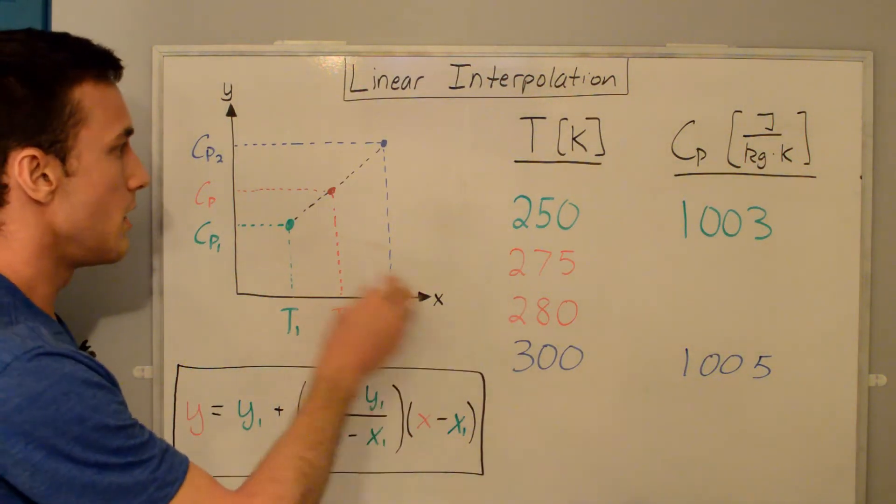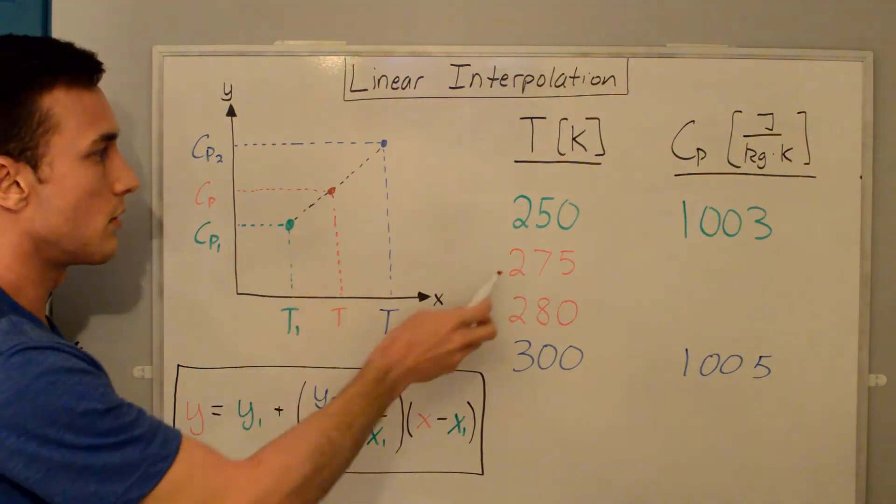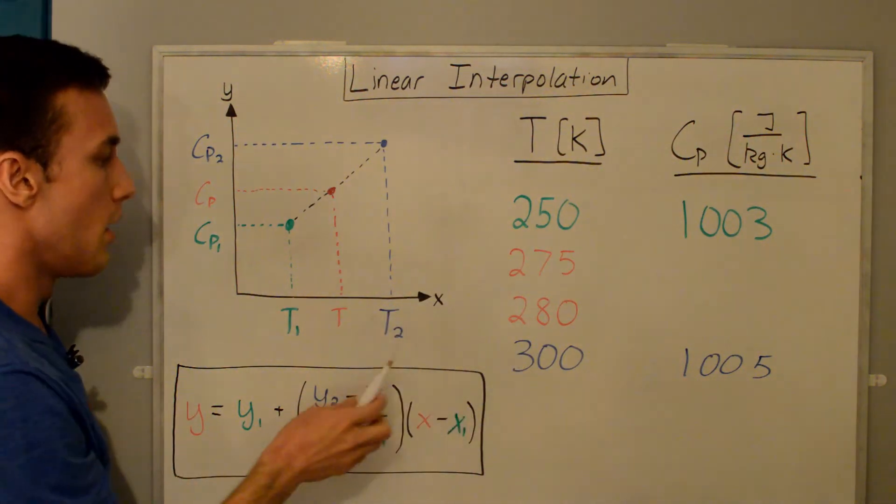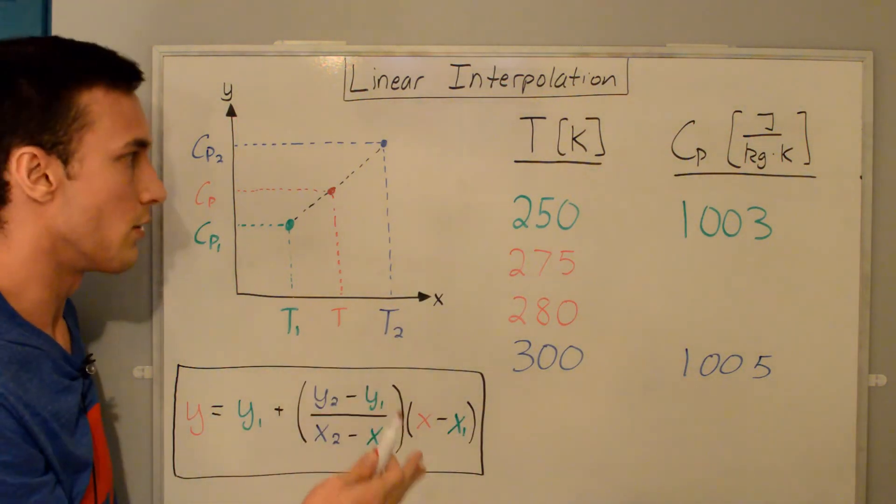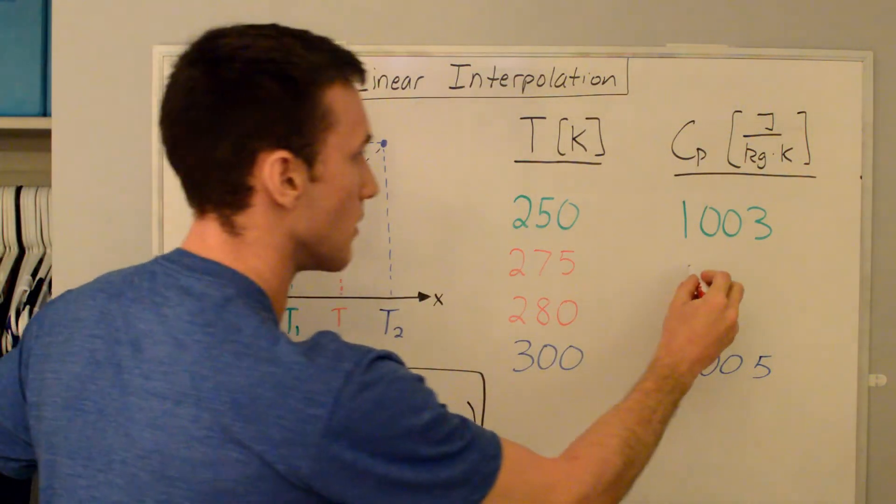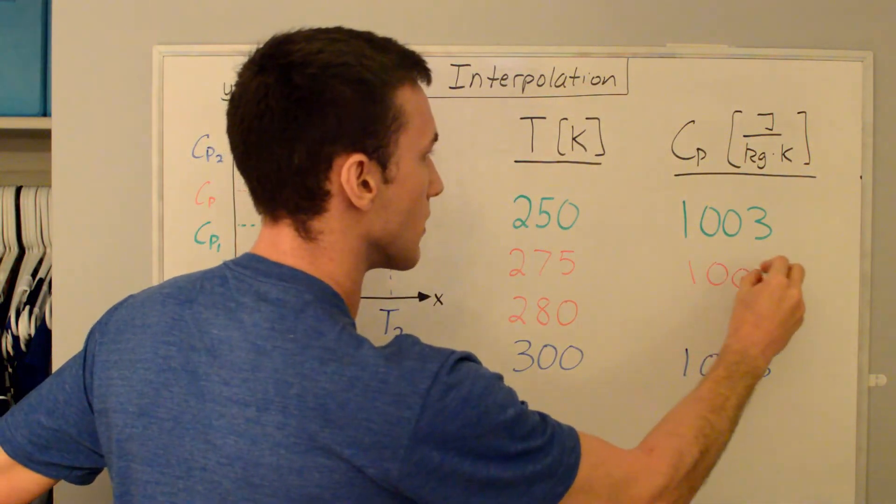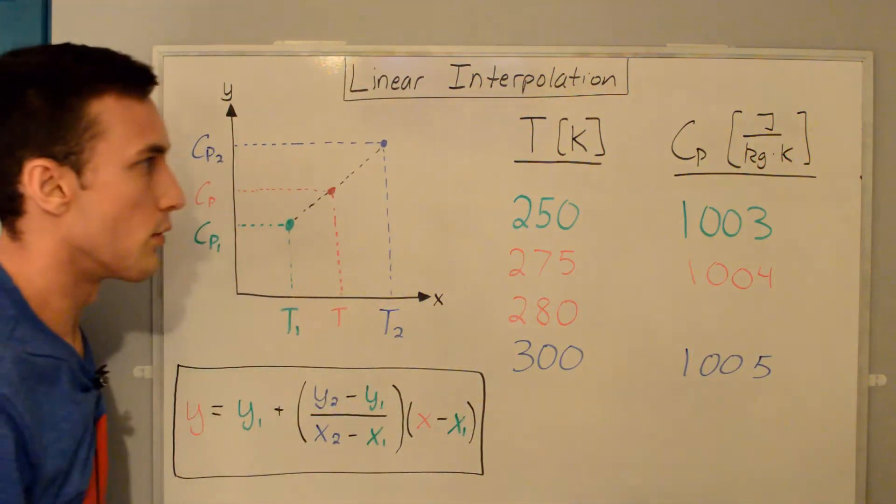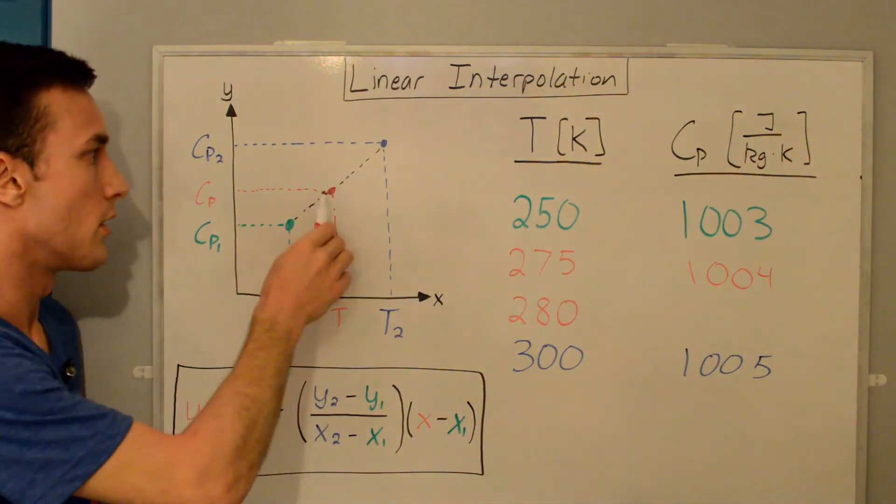For 275, you would imagine that if it were halfway between, so 275 is halfway between these two, when you plug in all these values that I've done already, you can get the value, and it'll end up being halfway between the CP. You end up getting 1004 joules per kilogram Kelvin for this value.